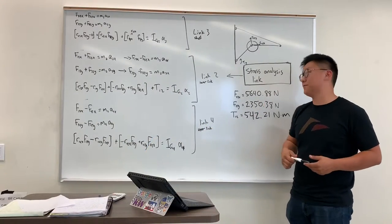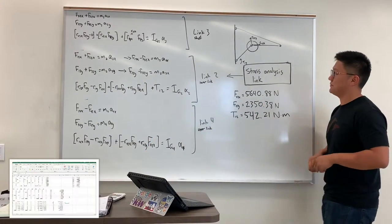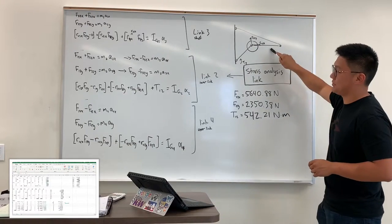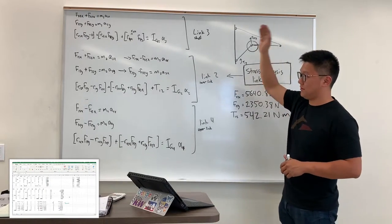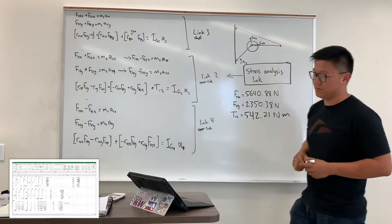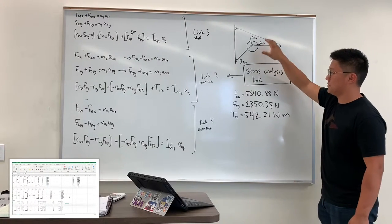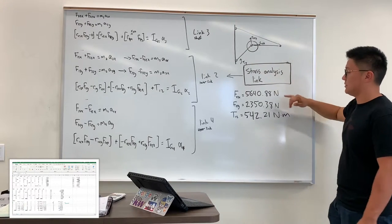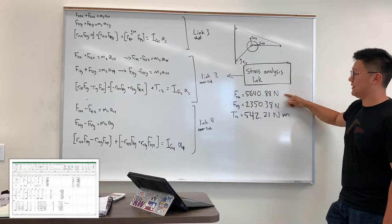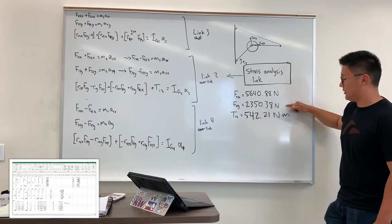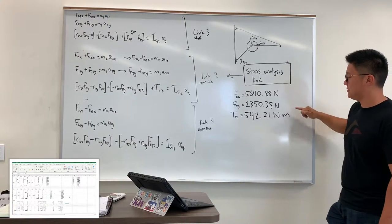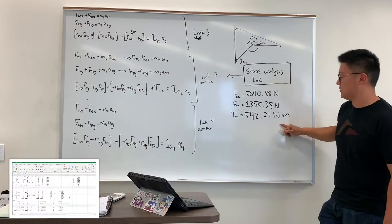Hi, I'm Joseph and we'll be going through the force analysis. So, we're looking at the forces in our mechanism due to the load on link 3. So, we set up all these big equations and we're going to put them all into this matrix here, solving for this column. And because we're going to be doing stress analysis on link 2, we're most interested in the forces at that point and also the torque on it. And we can see that the force in the x-direction is 5,640 N. In the y-direction, 2,350 N. And the torque is 542 N.